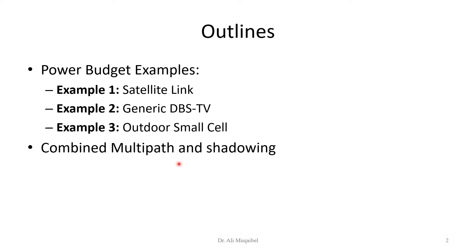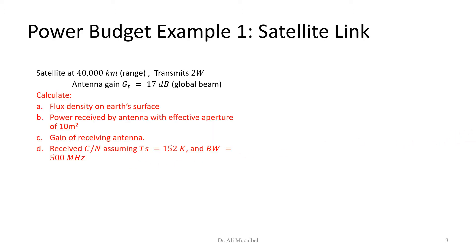Finally, we will motivate what comes next, which is the combined multipath and shadowing scenario. These are simple examples and then we need to consider multipath and shadowing in coming videos. The first example states that for a satellite link which is at 40,000 kilometers, the satellite transmits 2 watts and the antenna gain is 17 dB global beam.